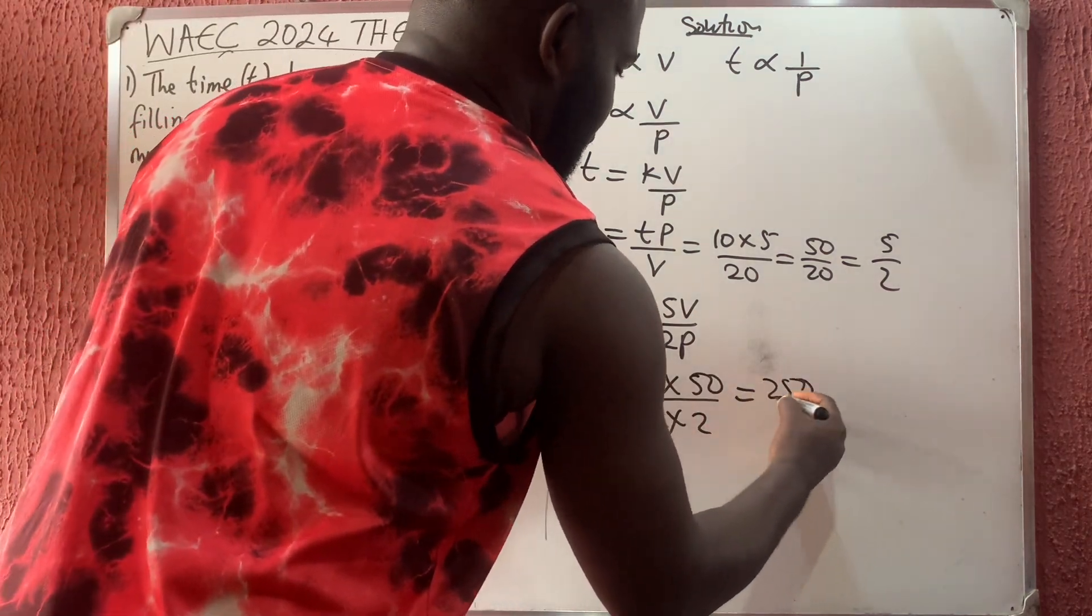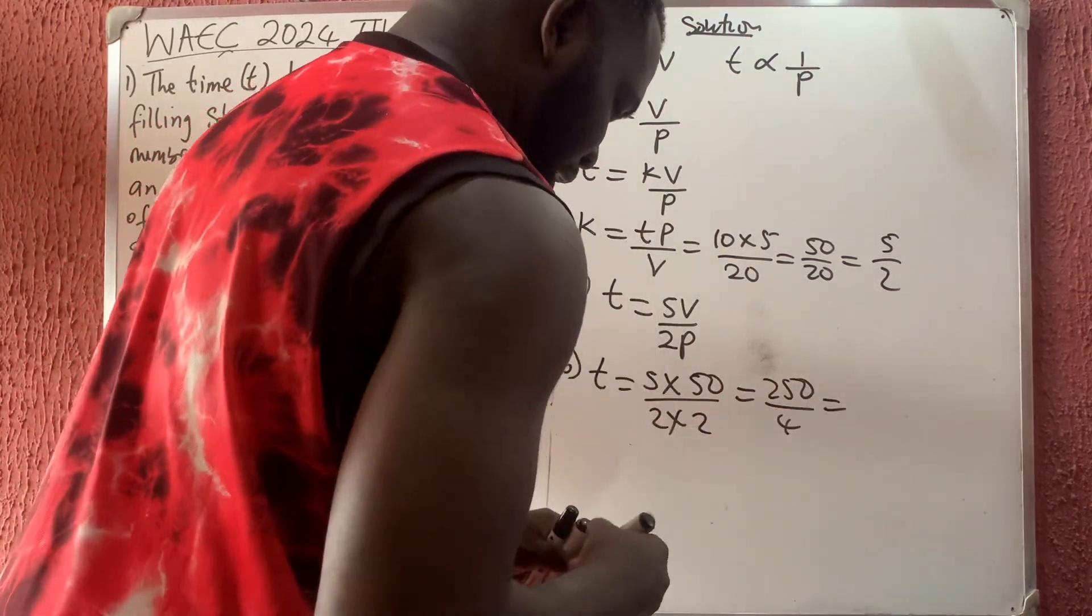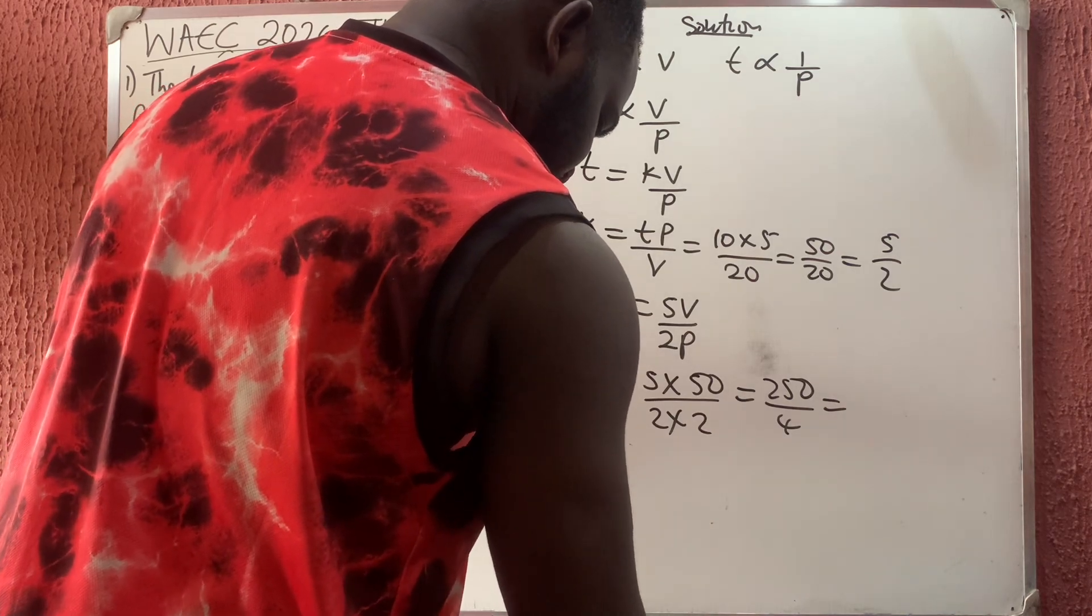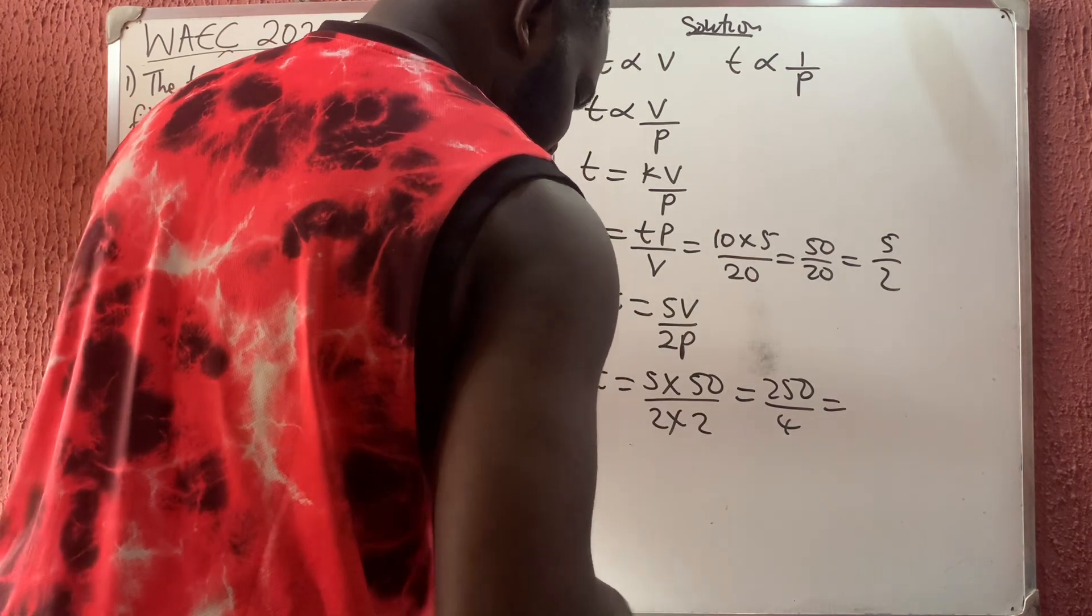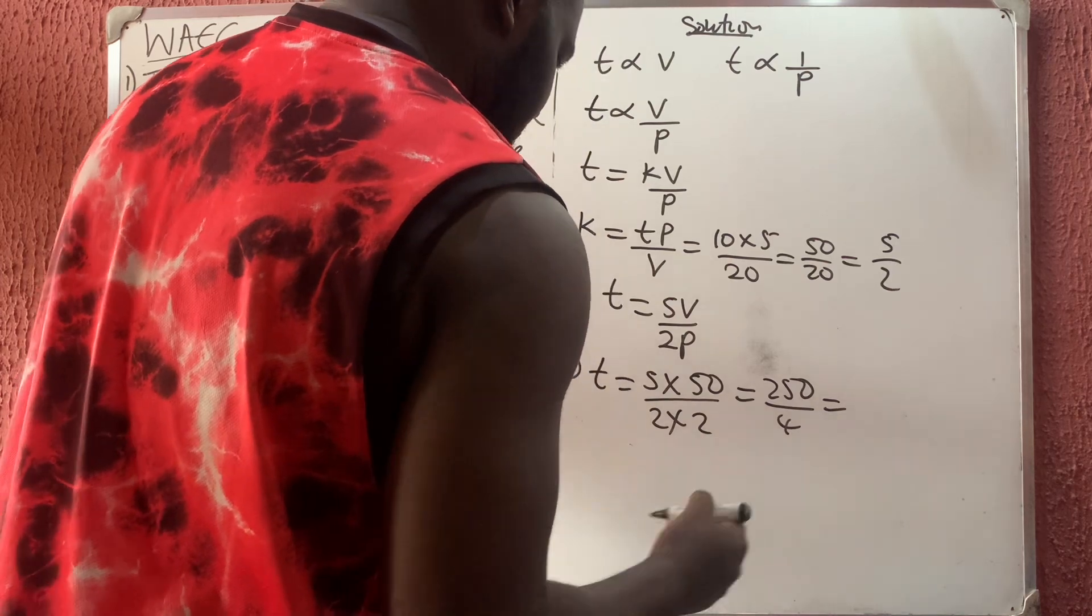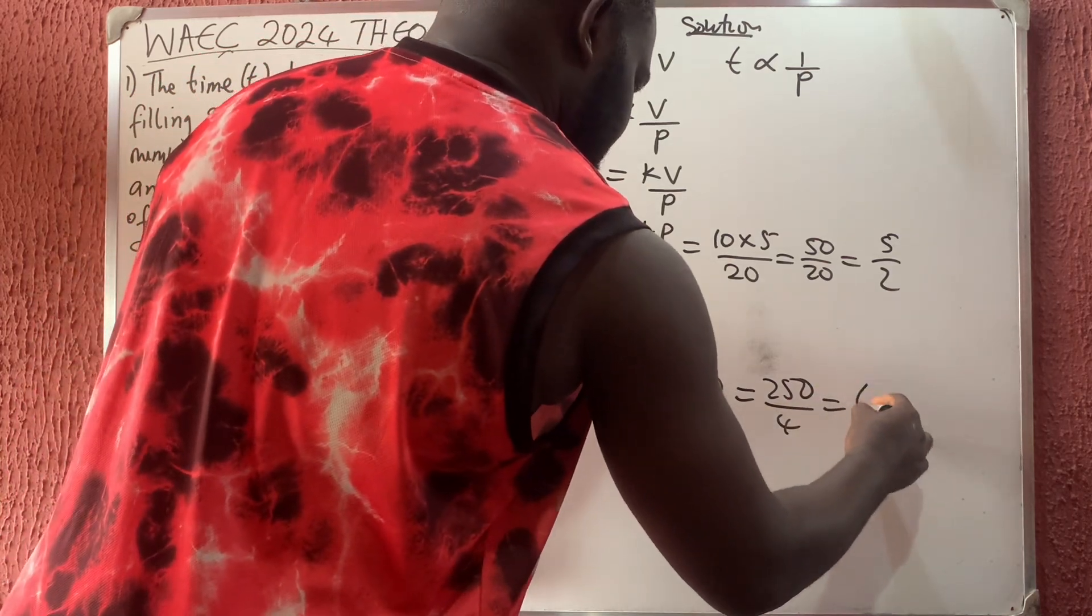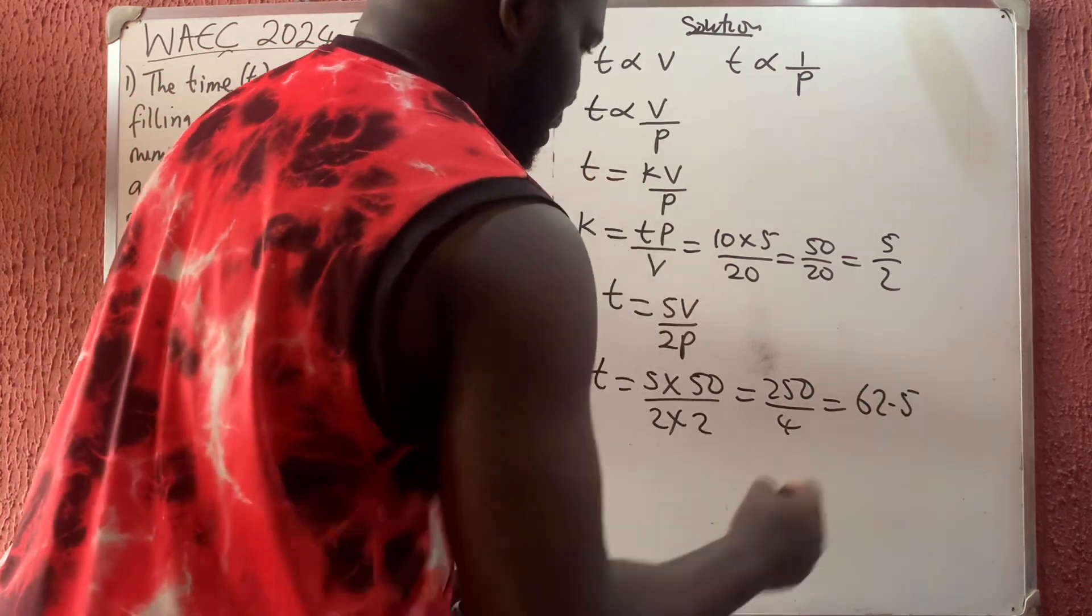So I'm having 5 times 50 is 250 over 4. 250 divided by 4 gives me 62.5 minutes.